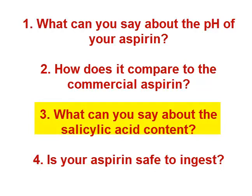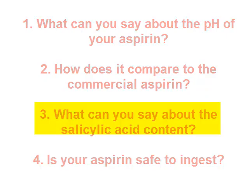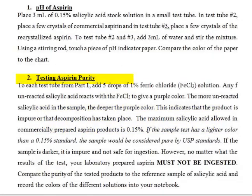In the second part of the experiment, we're going to test aspirin purity using what's called an iron chloride test. Normally, if you add iron chloride, any unreacted salicylic acid will react with it and that solution should turn purple. So we're going to test to see if there's any unreacted salicylic acid by adding a few drops of iron chloride to our aspirin sample.